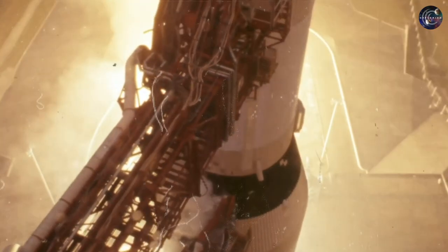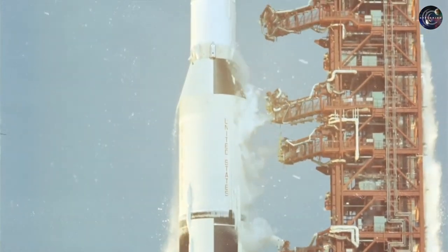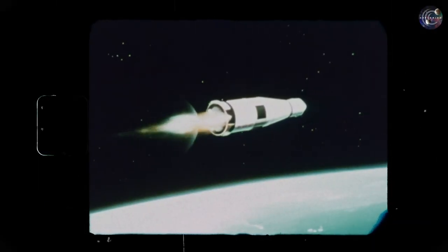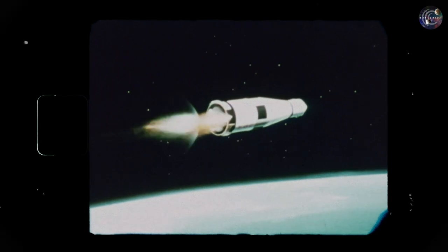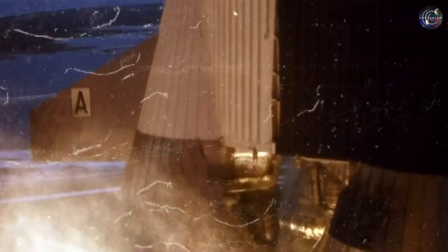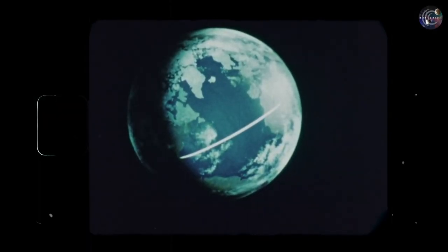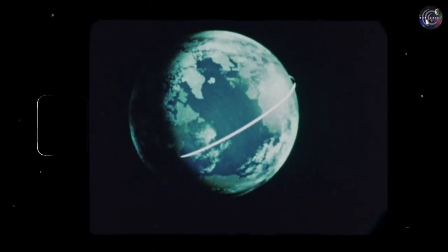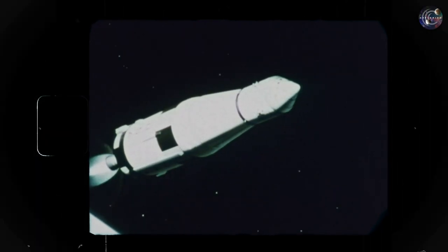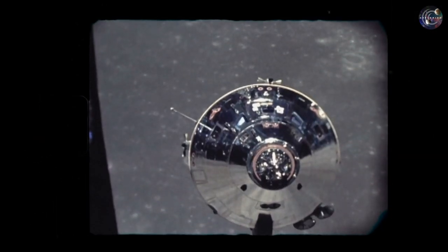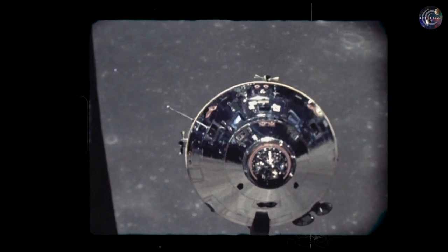Then comes the second stage, which fires for around six minutes, propelling both of them higher and faster in space. It was then up to the third and final stage to perform a brief burn and place the spaceship into orbit. Once in a stable orbit, the third stage would be fired up again to complete the Translunar Injection Burn and put the rocket and crew on a trajectory to intersect the Moon.